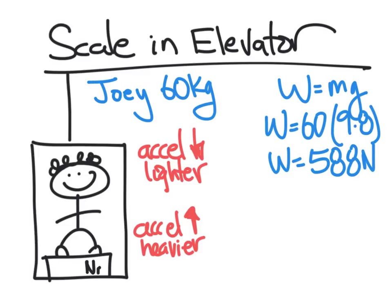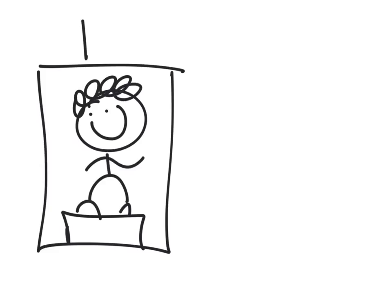So what we're interested in is, what is the reading on the scale? So as an example, let's say that the acceleration of the elevator is downward at 2 meters per second squared. So let's say we have Joey and the scale, of course. So he's having fun in this elevator, playing around, and the acceleration is downward, 2 meters per second squared.